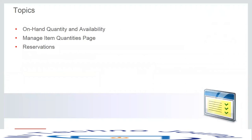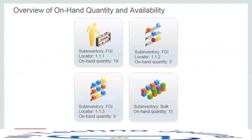The first topic is on-hand quantity and availability. On-hand quantity refers to inventory within the organization. From a sub-inventory point of view, on-hand quantity is the physical quantity residing in a particular sub-inventory. As shown in this screenshot, at the FGI sub-inventory level there is a large on-hand quantity, which can be split further at the locator level if locator control is enabled.